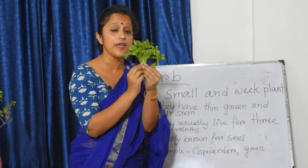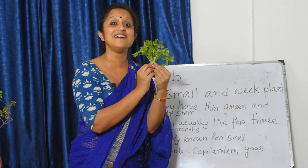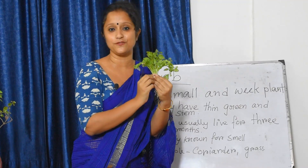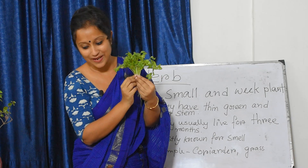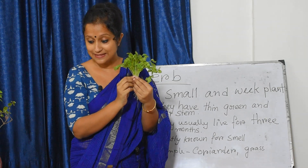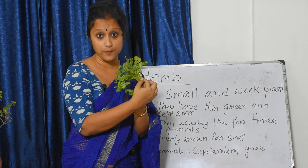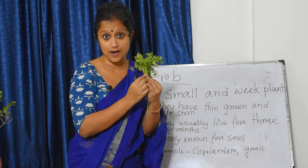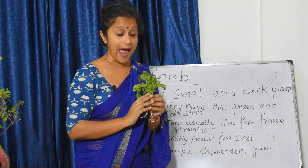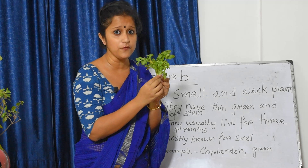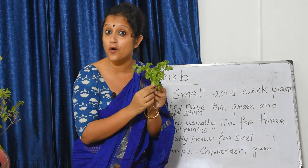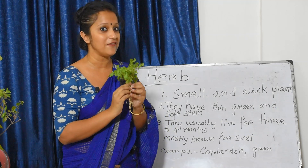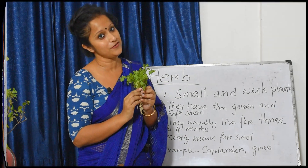Herbs are usually famous for their smell. And this type of plant — coriander leaves, grass — these are herbs. They usually live for three to four months. Now I will go for the next type of plant.